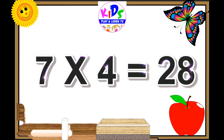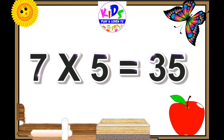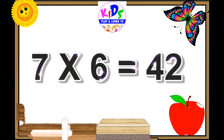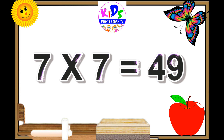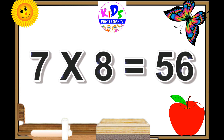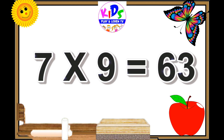Seven fours are twenty-eight, seven fours are twenty-eight. Seven fives are thirty-five, seven fives are thirty-five. Seven sixes are forty-two, seven sixes are forty-two. Seven sevens are forty-nine.